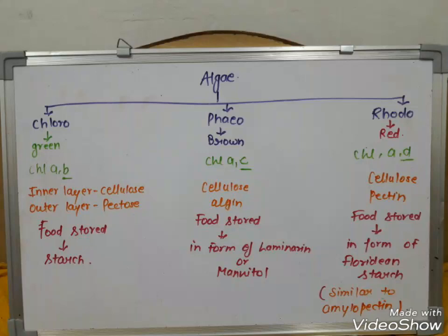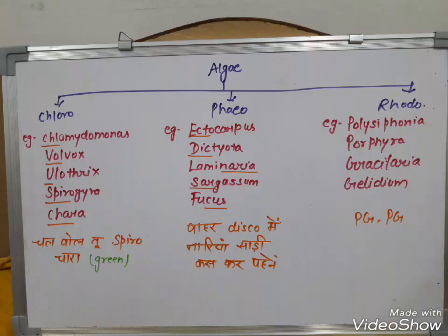The examples for each class are very important and can be confusing, so here are tricks. For Chlorophyceae, examples are Chlamydomonas, Ulothrix, Spirogyra, and Chara. The trick is 'Chara is a green girl' — Chara belongs to Chlorophyceae which is green. These examples often appear in NEET, so watch carefully.